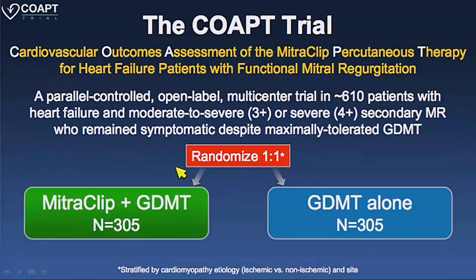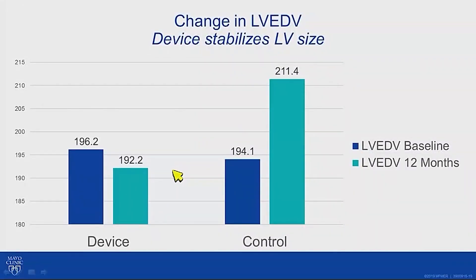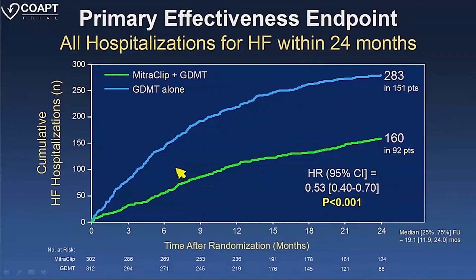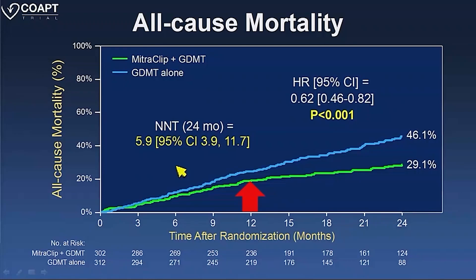The COAPT trial studied MitraClip in specifically secondary mitral regurgitation, in addition to goal-directed medical therapy. Everyone had to have carefully regulated guideline-directed medical therapy before being considered for the clip. Over time, by reducing the amount of regurgitation, we were able to stabilize changes in LV size. It's not just the immediate relief of regurgitant flow into the left atrium — it changes the trajectory of left ventricular remodeling, which is why it takes time to see results.